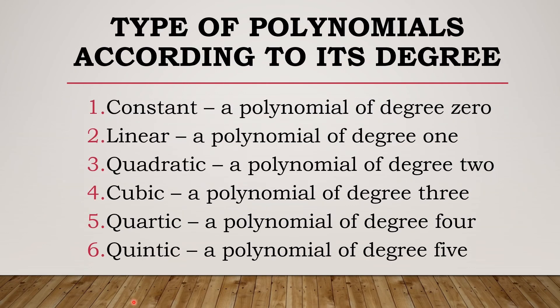We can also classify polynomials according to their degree. A polynomial of degree 0 is called a constant. Degree 1 is called linear. Degree 2 is called quadratic. Degree 3 is called cubic. Degree 4 is called quartic. And degree 5 is called quintic.